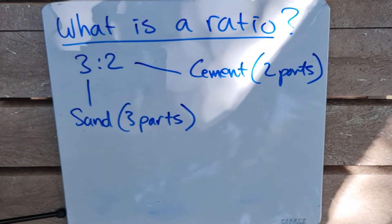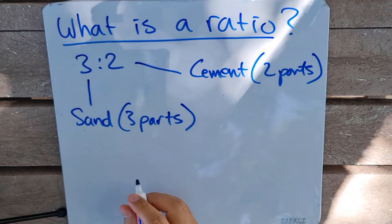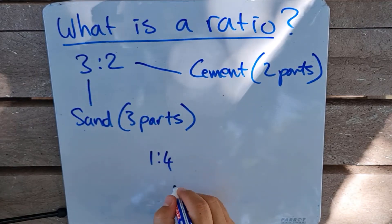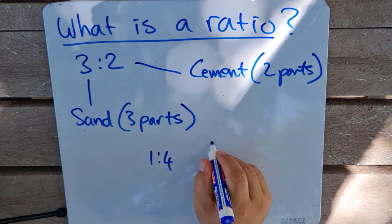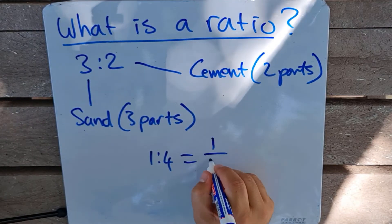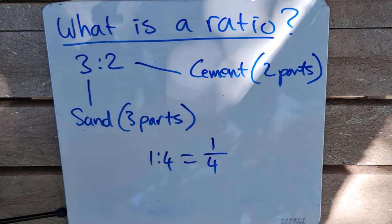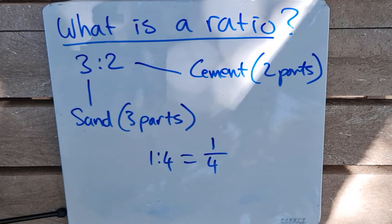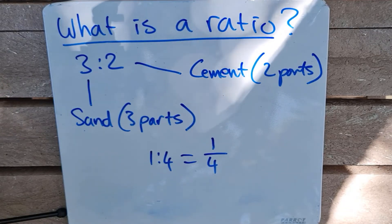A ratio is also simply a way of writing a fraction in a different way. For example, if I've got a ratio of one to four, that can also be expressed as one over four. When simplifying a ratio, we are basically multiplying or dividing both numbers in the ratio by the same amount.